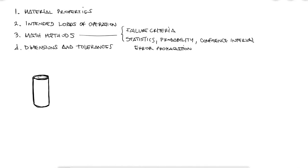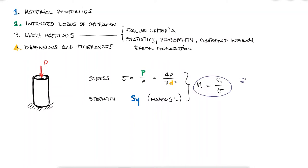So even if we go back to a very simple example of a rod under compression, we see that these uncertainty values can be calculated or at least estimated based on information about the material supplier, intended operation, and dimensions and tolerances, or even math processes like error propagation, depending on the failure criteria we're following.